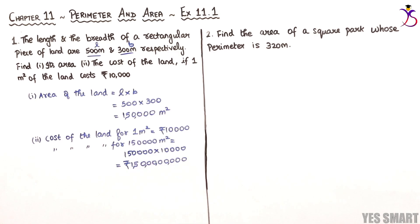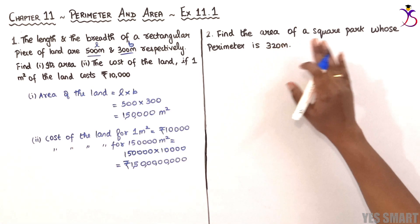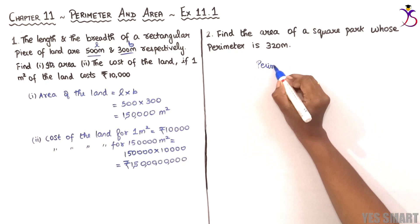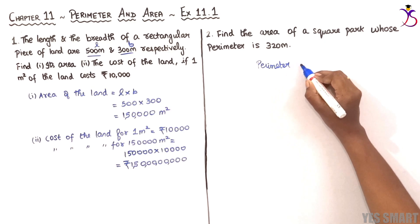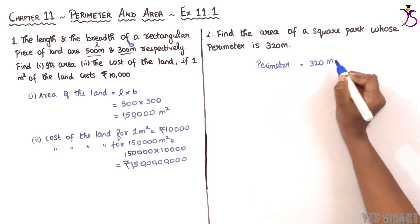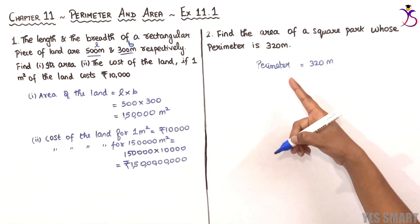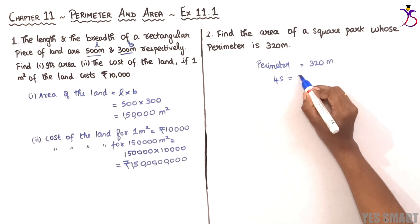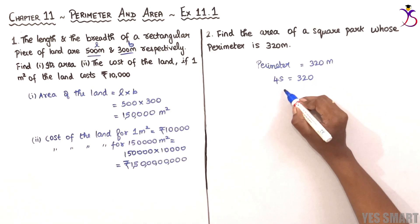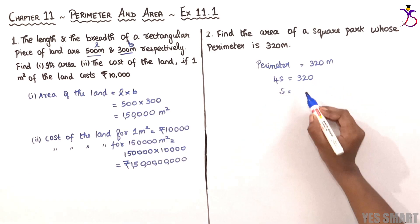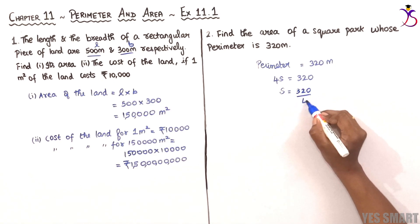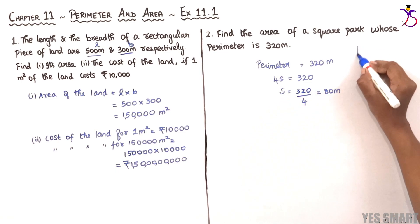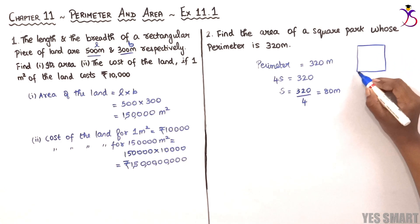Now let's discuss the second sum: find the area of a square park whose perimeter is 320 meters. Perimeter equals 320 meters. Since it is a square park, the perimeter of a square is 4s. Therefore 4s equals 320. When 4 is transposed it becomes division, so s equals 320 divided by 4, which equals 80 meters. The side of the park is 80 meters.